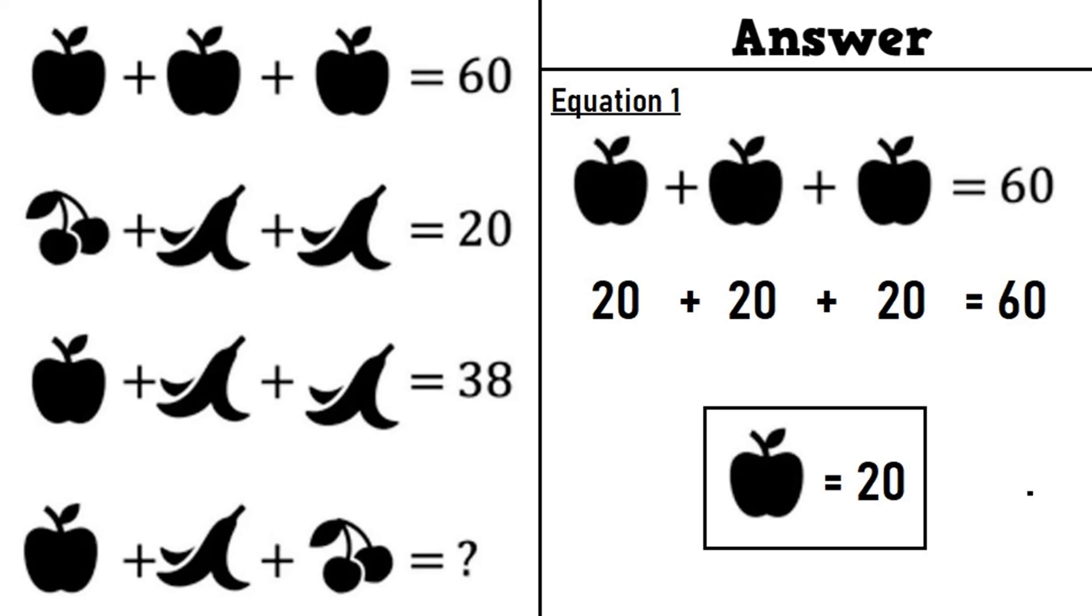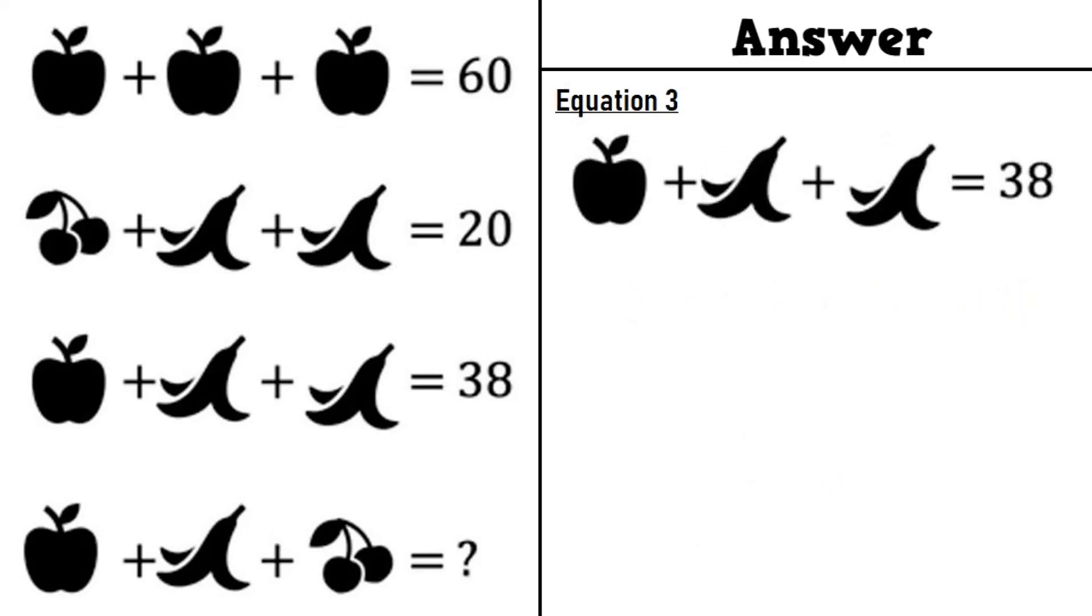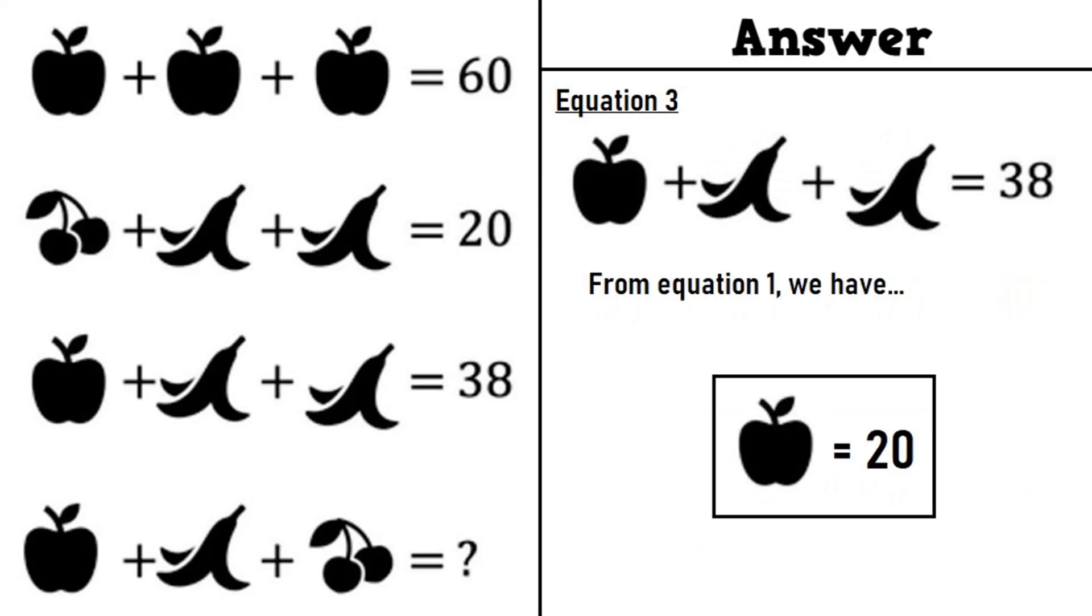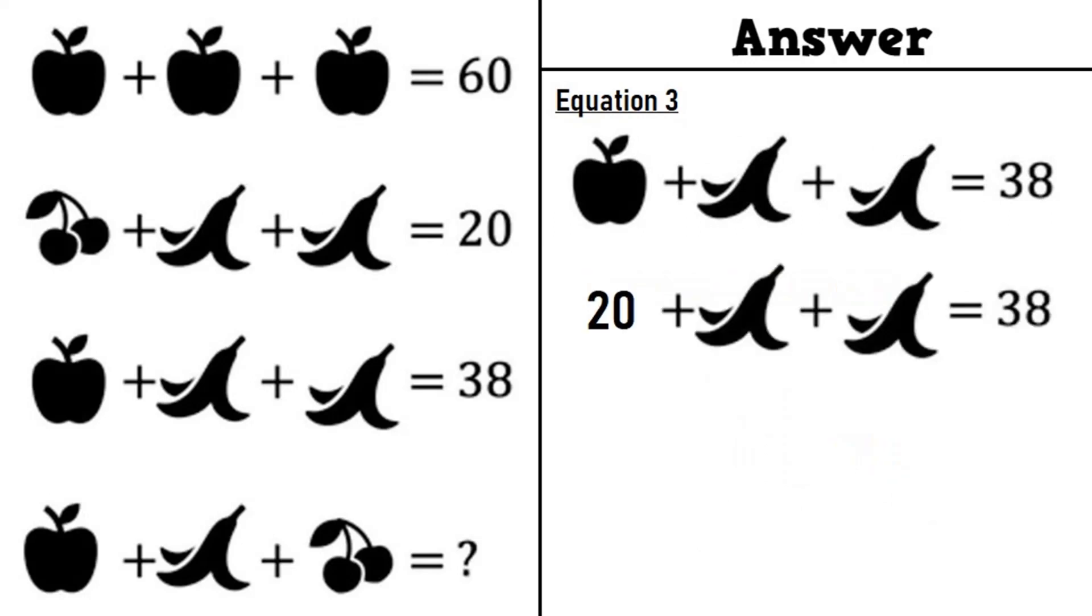Moving on to equation number 3, we have an apple plus a banana plus a banana is equal to 38. From equation 1, we have an apple is equal to 20. Putting that in equation number 3, we have 20 plus a banana plus a banana is equal to 38. 20 plus 9 plus 9 is equal to 38. A banana is equal to 9.